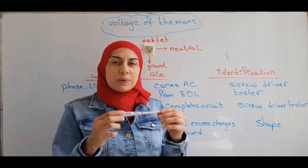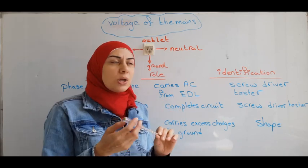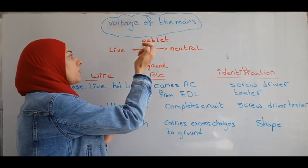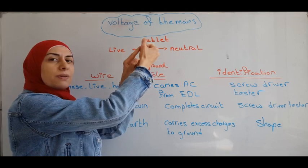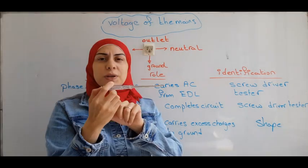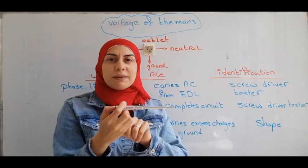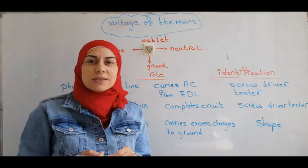And how do we identify them? We use the screwdriver tester. We insert it in one of them, and we complete the circuit by putting our thumb like this. If the lamp here glows, then it is the live. If it doesn't glow, then it is the neutral.